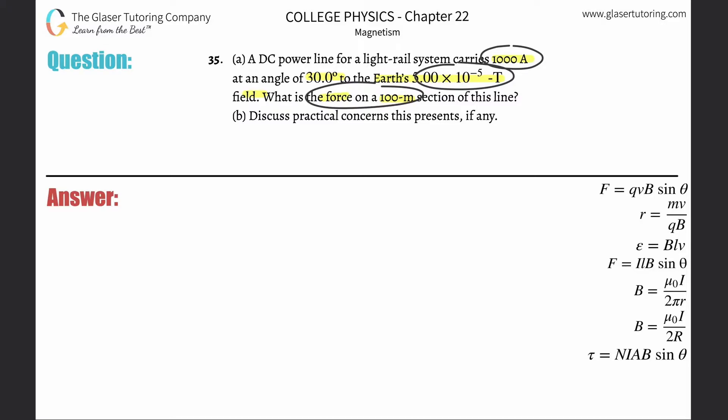The force on a current-carrying wire will be equal to the current flowing through the wire multiplied by the length of the wire, multiplied by the magnetic field strength, multiplied by the sine of the angle between the current and the magnetic field.